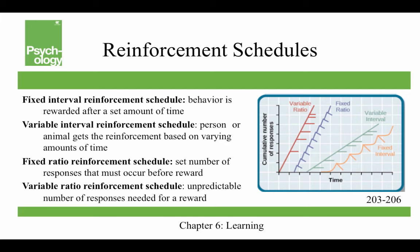A fixed ratio reinforcement schedule is a set number of responses that must occur before the reward. This is something like piece work — if you're manufacturing something, you get paid for every five widgets you create. Once you've made five, you get paid.